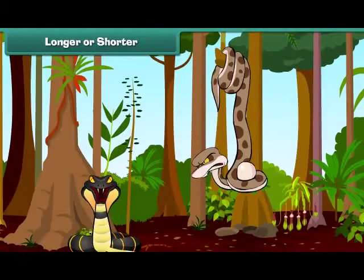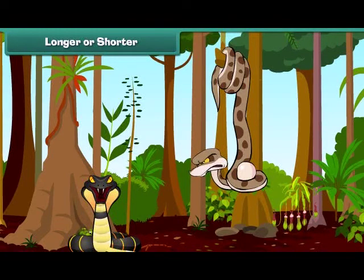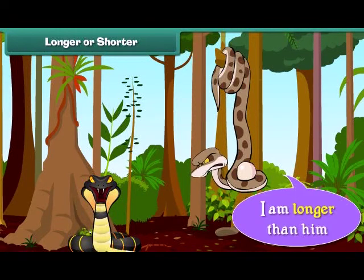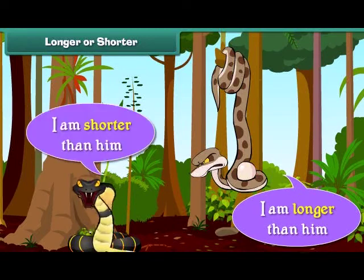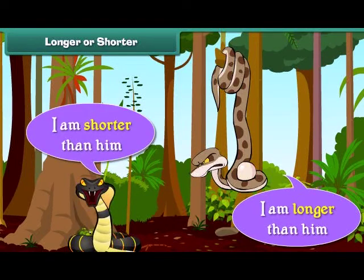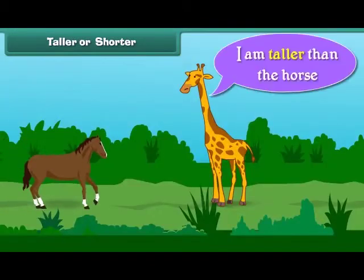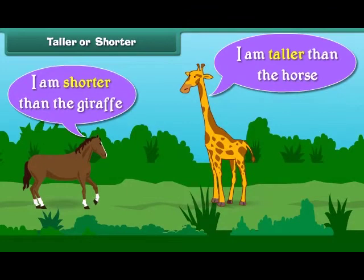When two objects are not of the same size, we compare them. I am longer than he is. I am shorter than him. I am taller than the horse. I am shorter than the giraffe.